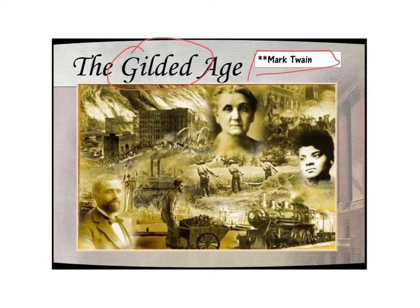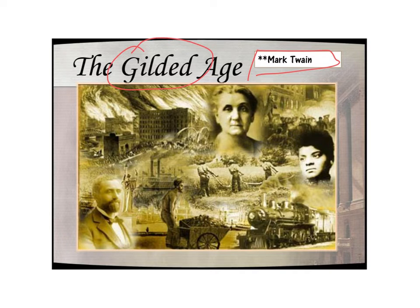Twain called it the Gilded Age because when you look at America during this period, it looks great. We're in the Second Industrial Revolution, which means more factories, more jobs, more money for people. There's a huge influx of immigrants coming over looking for the American dream. As more products are made they become more affordable, and the basic standard of living gets better and better — especially right after Civil War and Reconstruction.